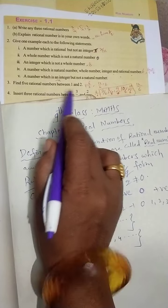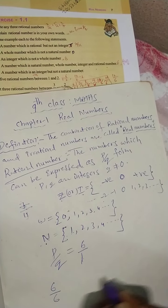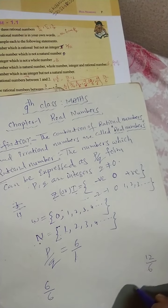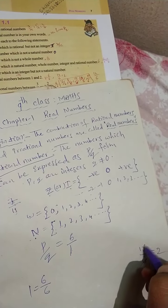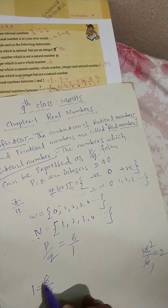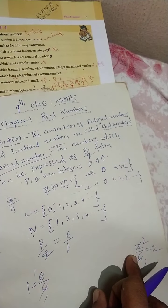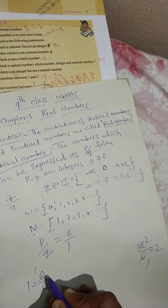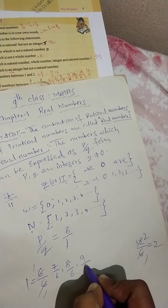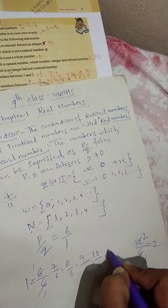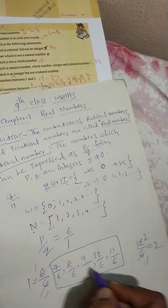Find 5 rational numbers between 1 and 2. Between 1 and 2, I am taking 6 by 6 which equals 1, and 12 by 6 which equals 2. So in between, we can write: 7 by 6, 8 by 6, 9 by 6, 10 by 6, 11 by 6. These are 5 rational numbers between 1 and 2.